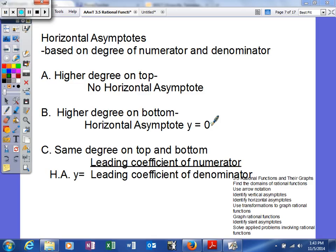So important to note, we have basically three options: A, B, and C. If you have a higher degree on top, you will have no horizontal asymptote.